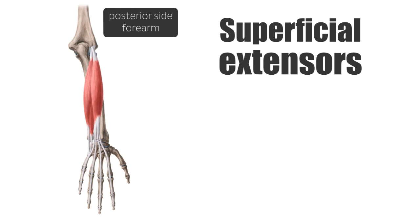They all share a common extensor tendon, as you can see right about here, on the lateral epicondyle of the humerus — this bone that you can see right about here. So they share a common tendon on the lateral epicondyle of the humerus, together with the extensor carpi radialis brevis from the radial musculature.